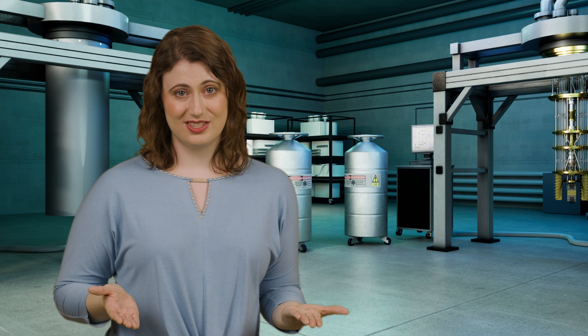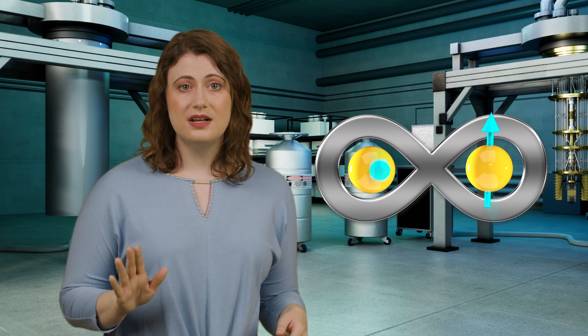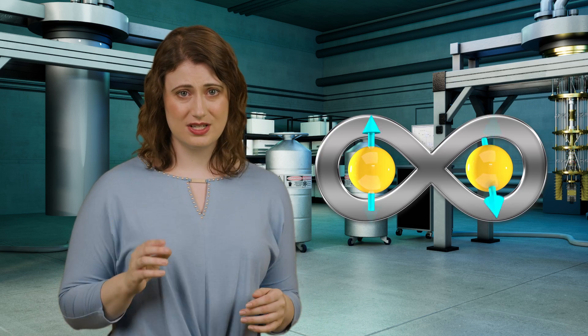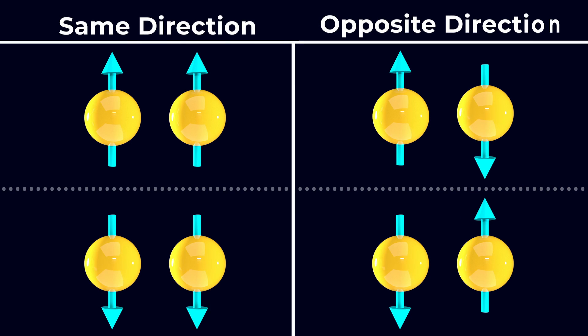Like we talked about previously, a single particle can also be in a superposition of these two outcomes, up or down. But a quantum system made of two entangled particles can actually be in a superposition of four outcomes: two where they're in the same direction and two where they're in opposite directions.